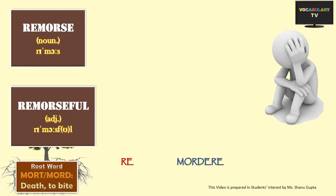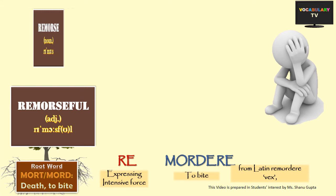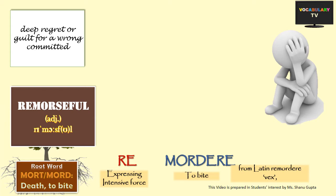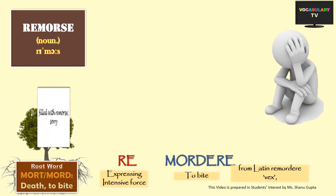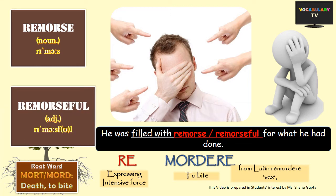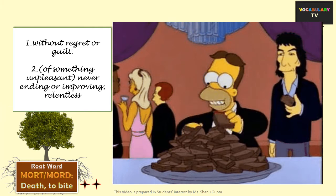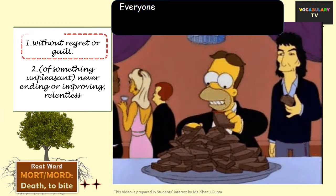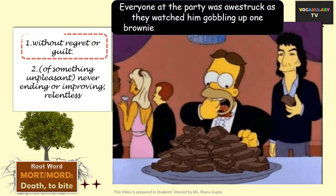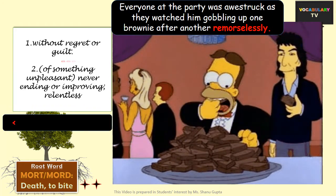The next word is 'remorse'. Literally, when something bites your conscience again and again, that's remorse. So remorse means a deep regret or guilt for a wrong committed. When one is full of remorse, he or she can be described as 'remorseful'. For instance: he was filled with remorse for what he had done — or rephrased: he was remorseful for what he had done. In contrast, when one is without any remorse, especially when one should be guilty or regretful, we use the word 'remorseless'. For example: everyone at the party was awestruck as they watched him gobbling up one brownie after another remorselessly. 'Remorseless' could also be used for something unpleasant which is never-ending or relentless, such as remorseless poverty.